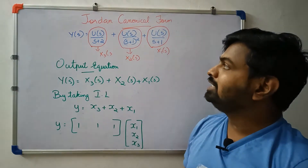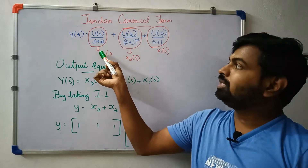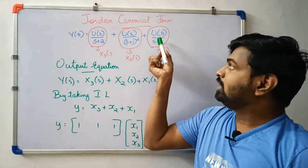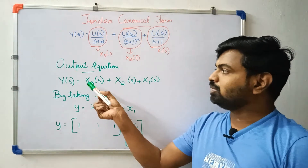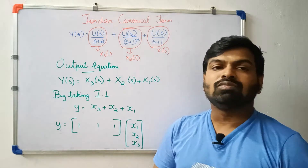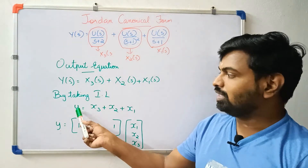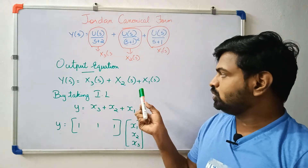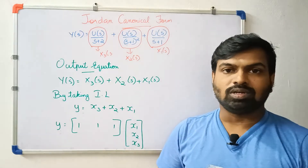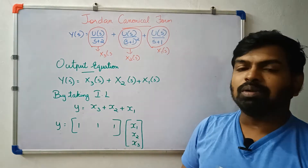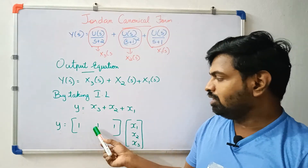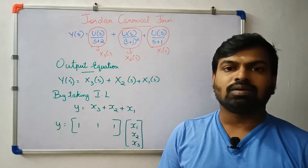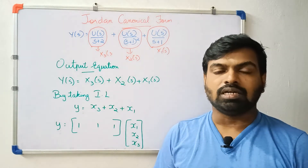The output equation: Y(s) = X3(s) + X2(s) + X1(s). Taking inverse Laplace, y = x1 + x2 + x3. In matrix form, the C matrix is [1, 1, 1] multiplied by the state vector [x1, x2, x3]ᵀ. This gives us the complete diagonal canonical (Jordan) form.